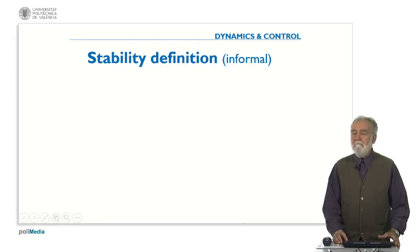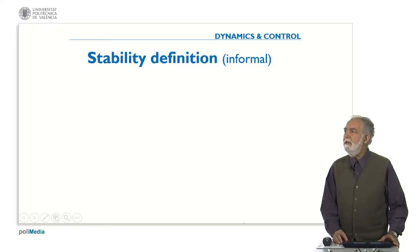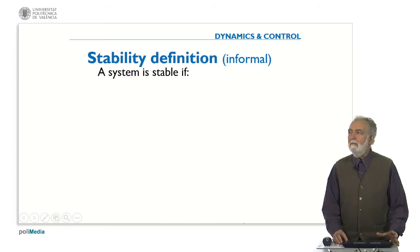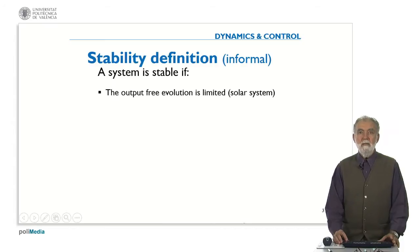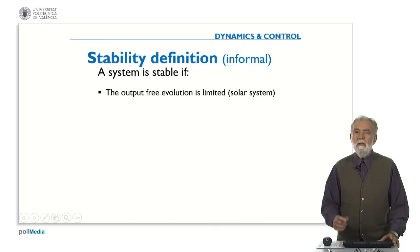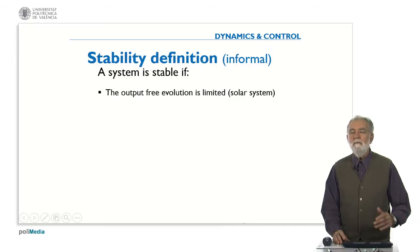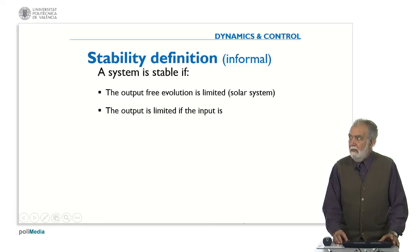Let's see an informal definition of stability. We can say that a system is stable if the output free evolution is limited. For instance, in the case of the solar system we see that the different planets and stars are moving around the Sun but the evolution is limited. They are not going too far away, they are not crashing against each other. If the system is not autonomous but is a forced system, then the output is limited as far as the input also is limited.